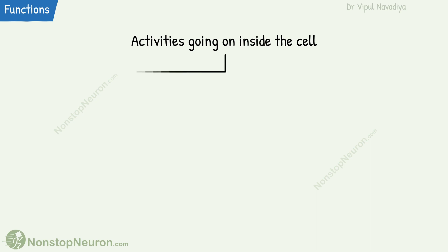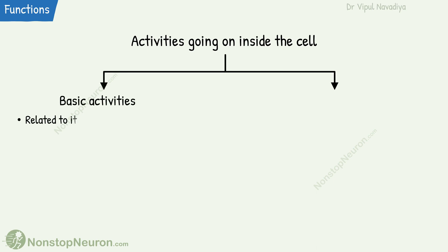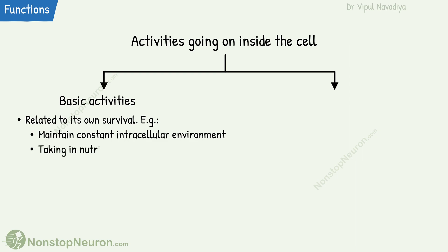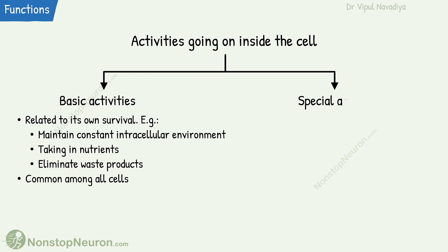Now let's talk about the functional part. Broadly, the activities going on inside the cell are of two types. One is the basic activities related to its own survival — for example, maintaining a constant intracellular environment, taking in nutrients, eliminating waste products, etc. Such activities are mostly common among all cells in the body. Along with that, each cell is given some special duties as well.